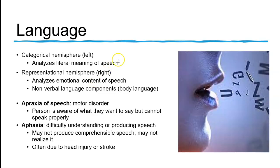Both Wernicke's and Broca's areas are in the left hemisphere in most people. That is where we analyze the literal meaning of speech — that is the categorical hemisphere. The representational hemisphere is the right hemisphere. The area opposite Wernicke's area, located in the right hemisphere, recognizes the emotional content of speech.